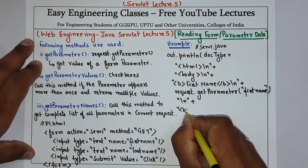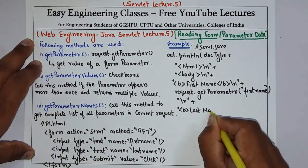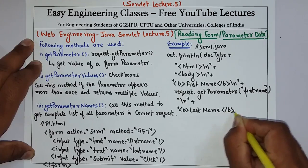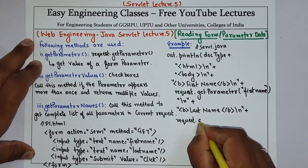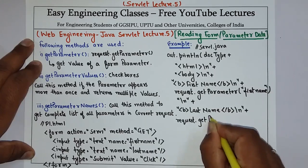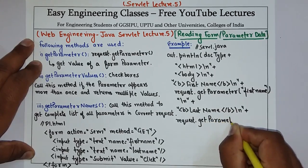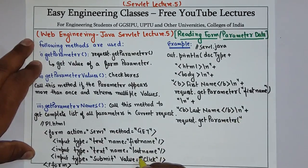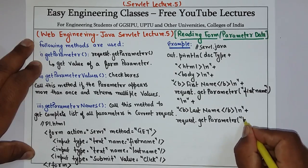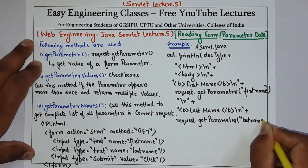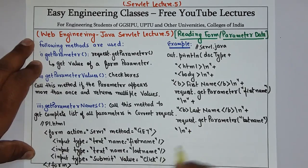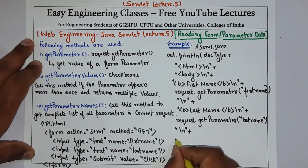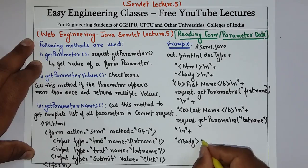Similarly, if you have to display the last name, write it the same way: use request.getParameter and inside it use the text field name, that is 'lastname'. After that, simply close the body tag and the HTML tag.